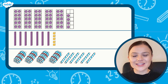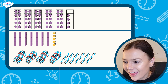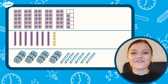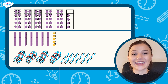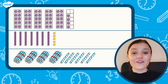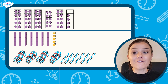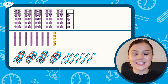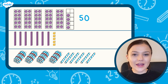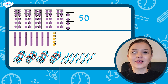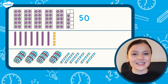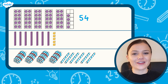Welcome back. How did you get on? Fantastic. Let's take a look at the answers together. The first number has five tens and four ones. Therefore the number is 54.